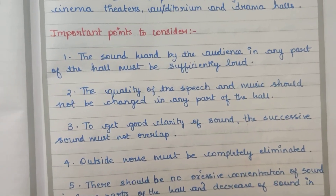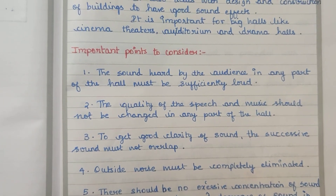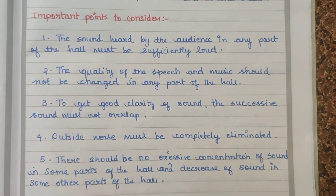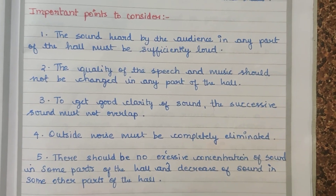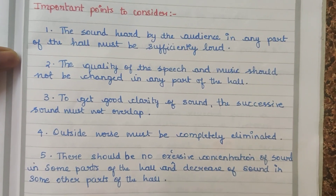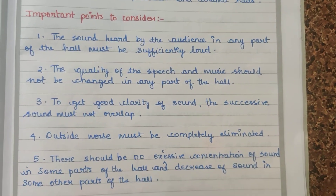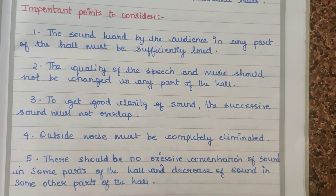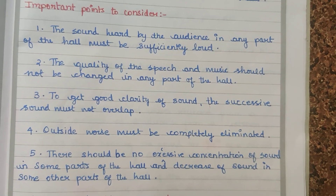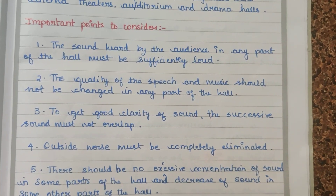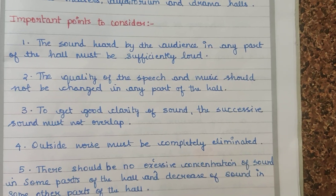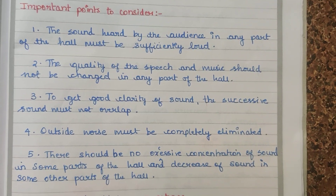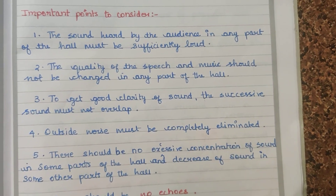When we hear the sound effect, the clarity is important in the hall. In a cinema theatre, to get good clarity of sound, successive sounds must not overlap — that is, the dialogues must not overlap. The sound frequency must be clear.